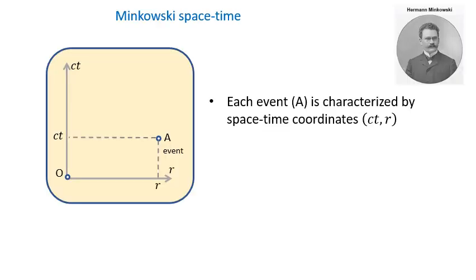To make things as simple as possible, in this lecture I will pretend that our world has only one space dimension, which I will call R. Then the Minkowski spacetime is a two-dimensional plane where each event is characterized by two coordinates: CT and R. I multiplied time T by the speed of light C so that this coordinate has a physical dimension of distance, the same as R.